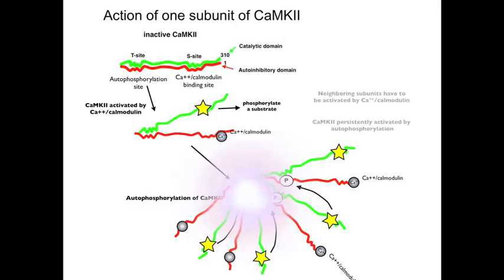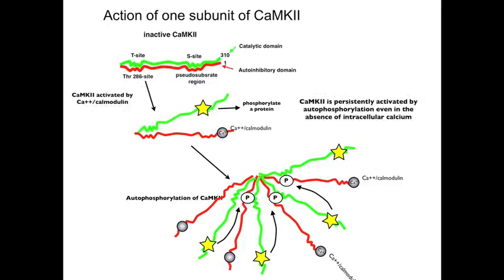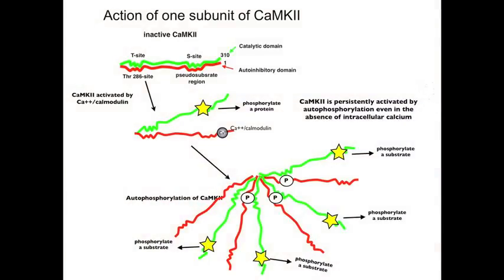Because many neighboring subunits were open due to the large influx of calcium, the neighboring subunits become autophosphorylated and CAM kinase 2 is persistently active. The persistent activation means that the kinase remains active and can phosphorylate other proteins even after intracellular calcium falls to baseline levels, which removes the calcium-activated calmodulin from the kinase molecule.